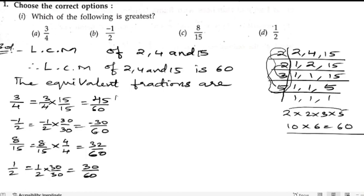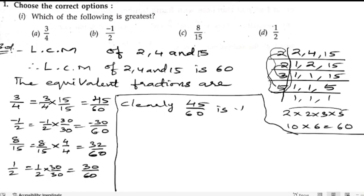Here we got all these numbers, and from here we can easily find out which one is the bigger. So we can see that 45/60, 45 is the biggest or greatest number. So we can write clearly 45/60 is the greatest. So the actual number in place of 45/60 is 3/4. That is the simplest form. So 3/4 is the greatest.